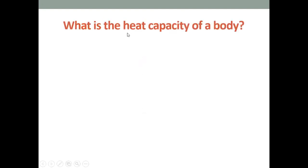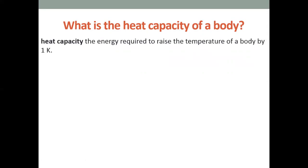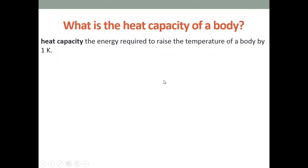Now let's learn about heat capacity, which is totally different from specific heat capacity — don't confuse them. Heat capacity is the energy required to raise the temperature of a whole body by one kelvin. Specific heat capacity is per one kilogram, but heat capacity applies to the entire body. To find heat capacity, use: heat capacity = energy / change in temperature.